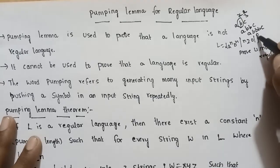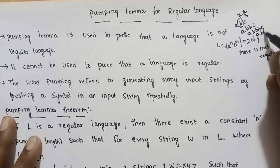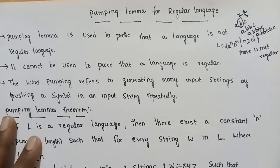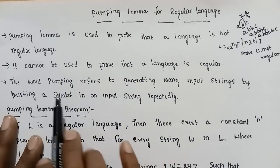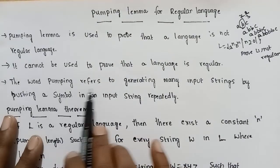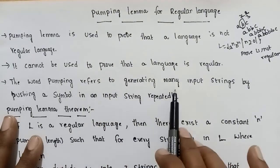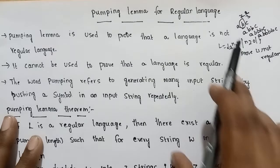Four times push gives A, B, B, B, B, C. In this case, pumping — the word pumping refers to generating many input strings by repeating a symbol.